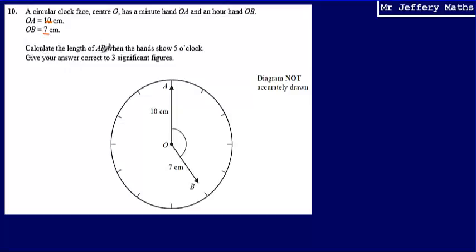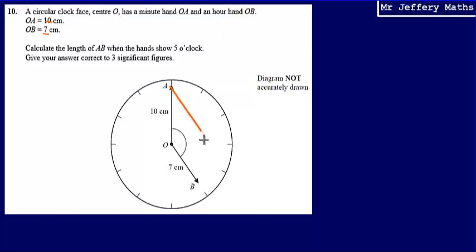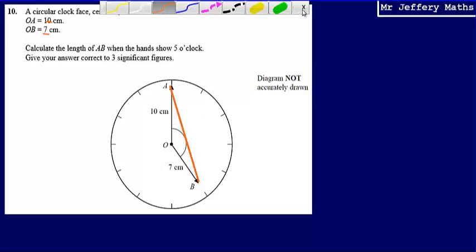We're asked to calculate the length of AB when the hands show 5 o'clock. So we're looking to try and find the distance between this point here and the point down the bottom. Essentially what we've got is a non-right angled triangle. As soon as I see that I'm trying to find a length on a non-right angled triangle, immediately I'm thinking I need trigonometry, and specifically it's going to either be the sine rule or the cosine rule.